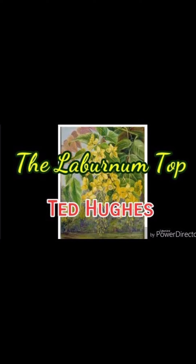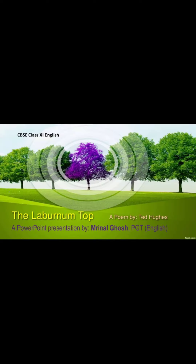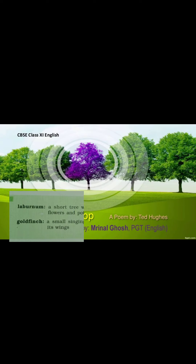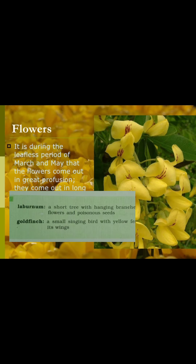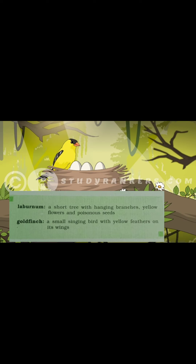Now I would like to discuss two terms used in our poem. First is the Laburnum tree — this is a short tree with hanging branches, yellow flowers, and poisonous seeds. The next term is goldfinch, which is a small singing bird with yellow feathers on its wings.